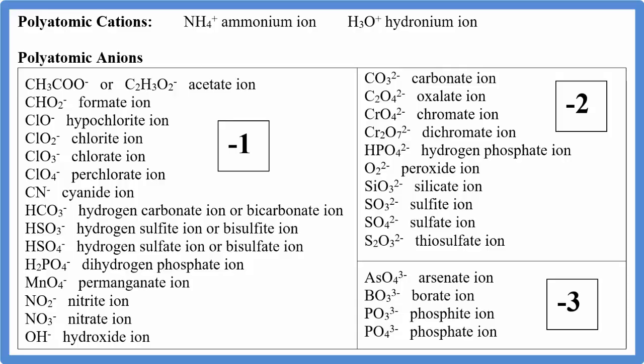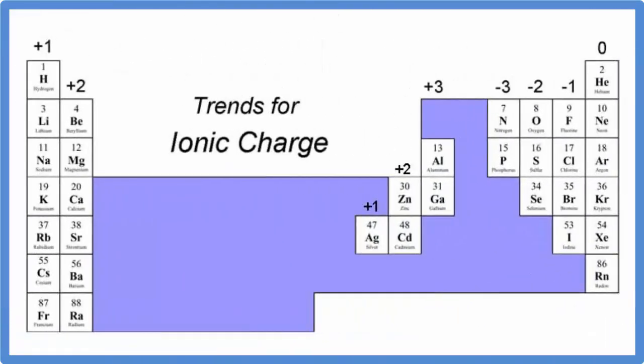What about other ions? Well, if we look at the periodic table, there's a pretty simple trend for many of the elements. Group 1 has a plus 1 charge, group 2 plus 2.